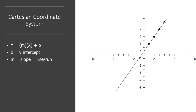We're going to use the Cartesian coordinate system to define our line — that's what y = mx + b is. You might remember that b was your y-intercept and m was your slope, defined as rise over run. In this particular case, going two up and over one means our slope would be two.